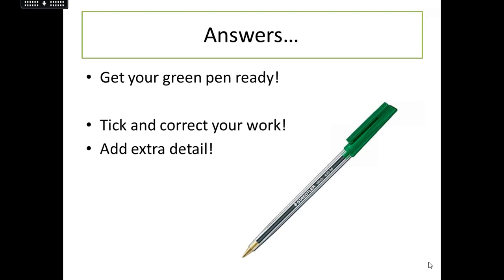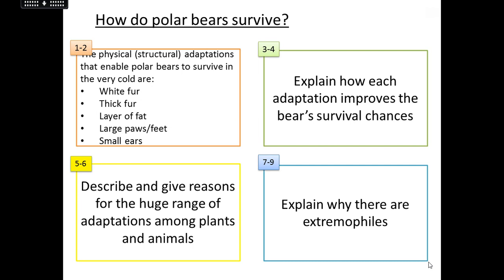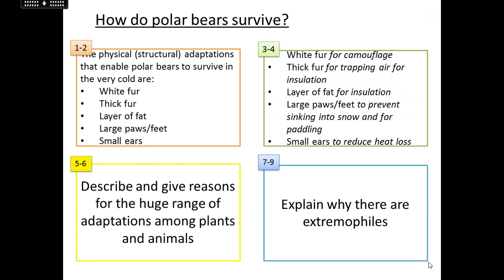Let's go through the answers — grab a different colour pen to correct and add extra detail. For grades 1-2, any of these are fine: white fur, thick fur, layer of fat, large paws or feet, and small ears. Brown irises or black skin are also acceptable. These are probably the five most obvious ones. For grades 3-4, you should have added the explanations: white fur for camouflage, and you can add for creeping up on prey; thick fur for trapping air, for insulation or for keeping warm; the layer of fat also for insulation; large paws prevent sinking into snow and help with paddling in water; small ears to reduce heat loss.